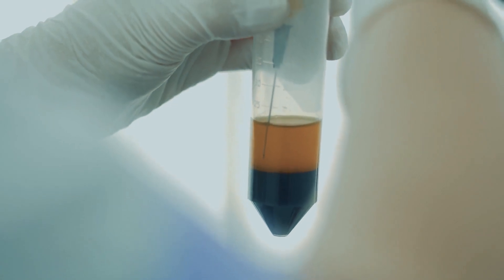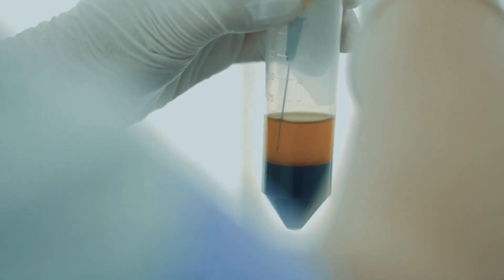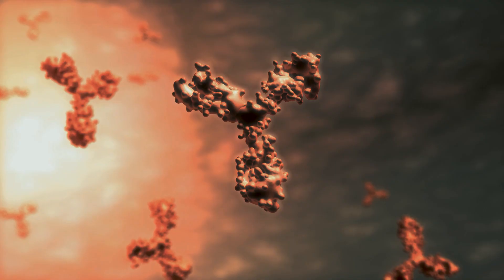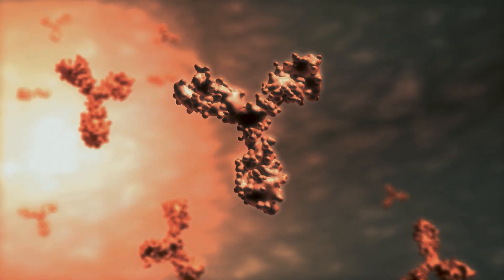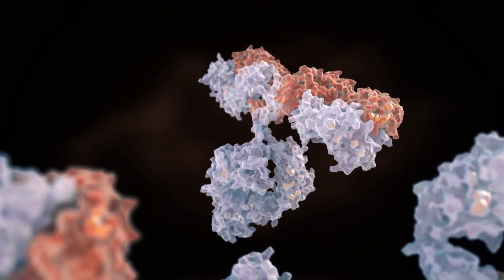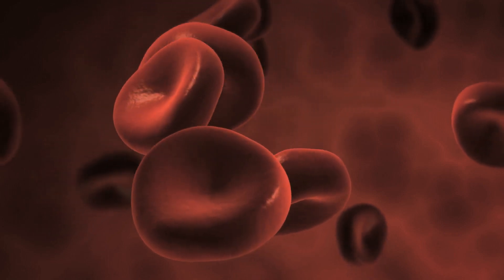Plasma carries red blood cells, white blood cells, and platelets throughout the body in the form of blood. Antigens, substances that cause one's immune system to create antibodies, and proteins float on red blood cells and in the plasma.